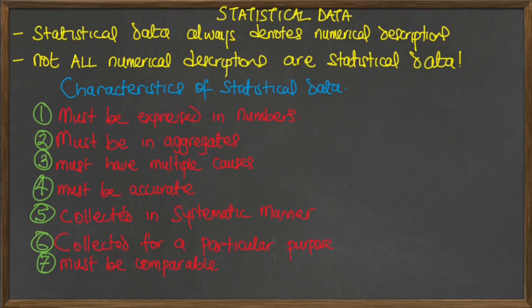These are the characteristics of statistical data: the data must be expressed in numbers, it must be in aggregates, it must have multiplicity of causes, it must be accurate, it must be collected in a systematic manner, it must be collected for a particular purpose, and it must be comparable. From all that has been said, all statistics are numerical statements of facts, but not all numerical statements of facts can be called statistics.